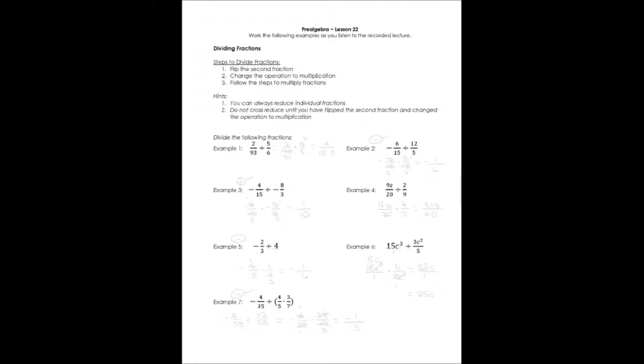Remember, you can always reduce individual fractions. That's before you flip them or after you flip them. You can always cross-reduce once they have been flipped. You cannot cross-reduce division. You can only cross-reduce fractions that are being multiplied. So don't make the mistake of cross-reducing early, but you can always reduce an individual fraction itself.